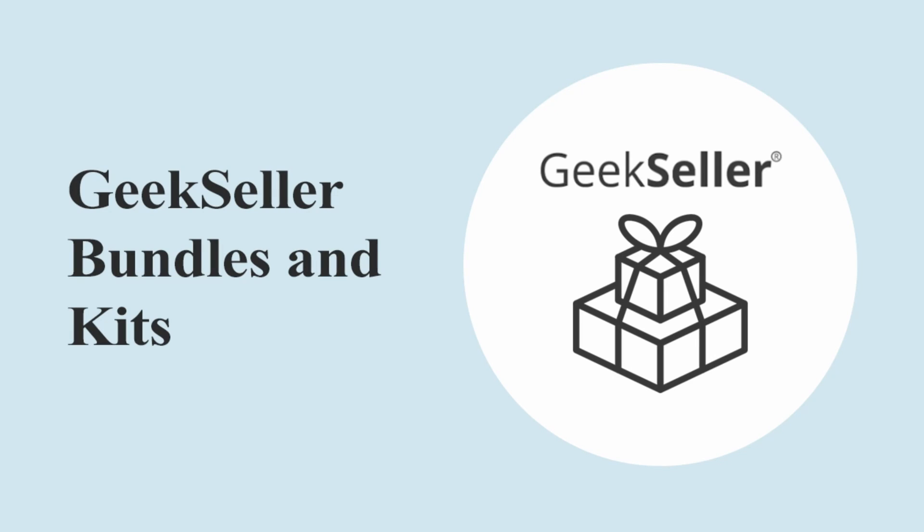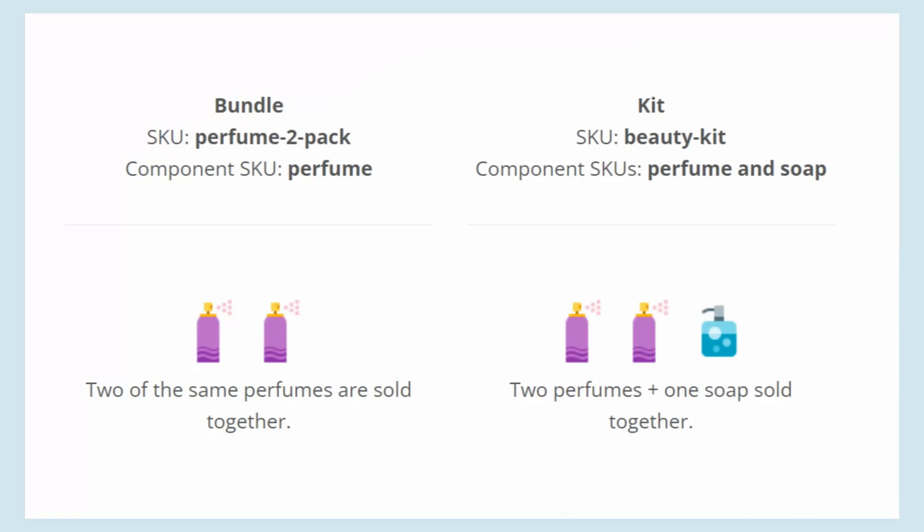Hello, this is Tomasz from GeekSeller. In this video I would like to show you the bundle and kits functionality available for GeekSeller users. By e-commerce definition, a bundle is simply a multi-pack of a specific SKU, while a kit is a set of two or more different products sold together and presented on the marketplace as a single listing.